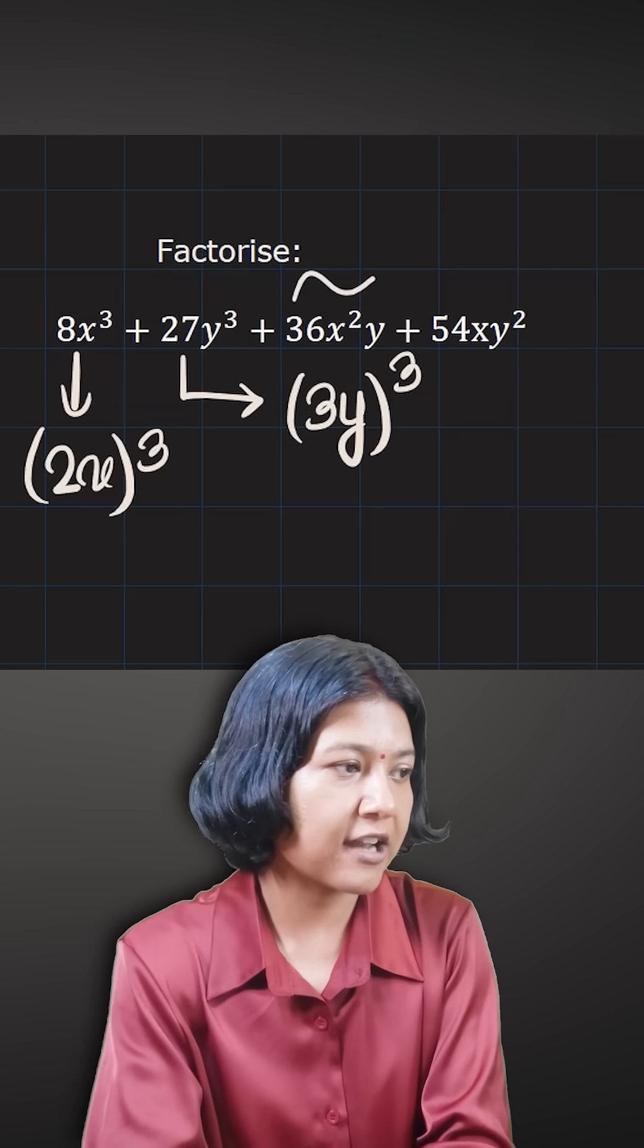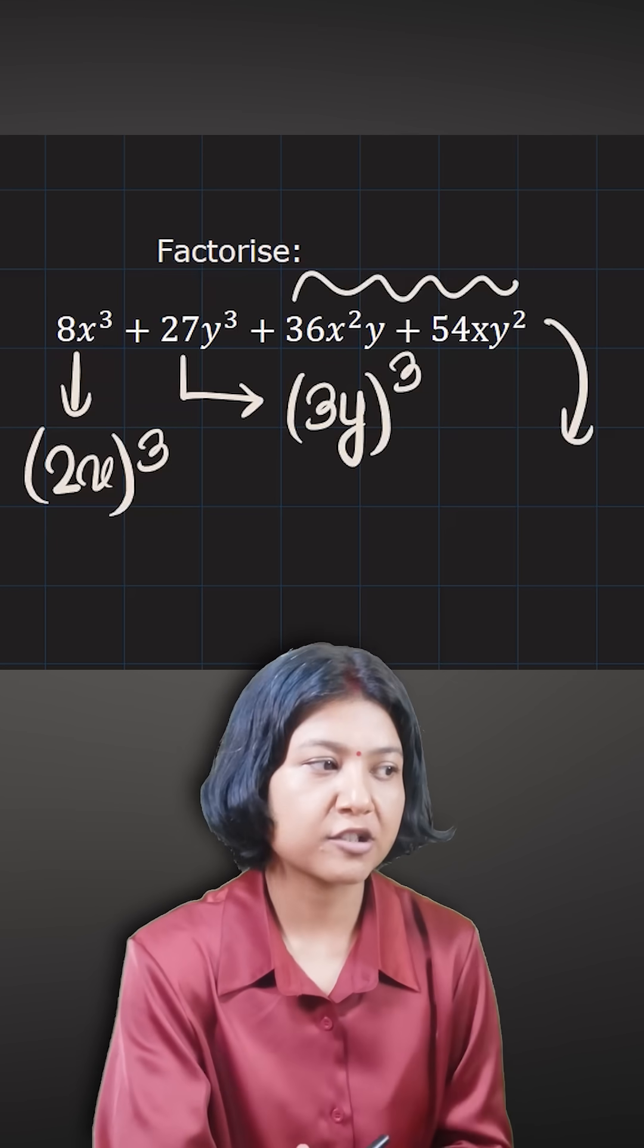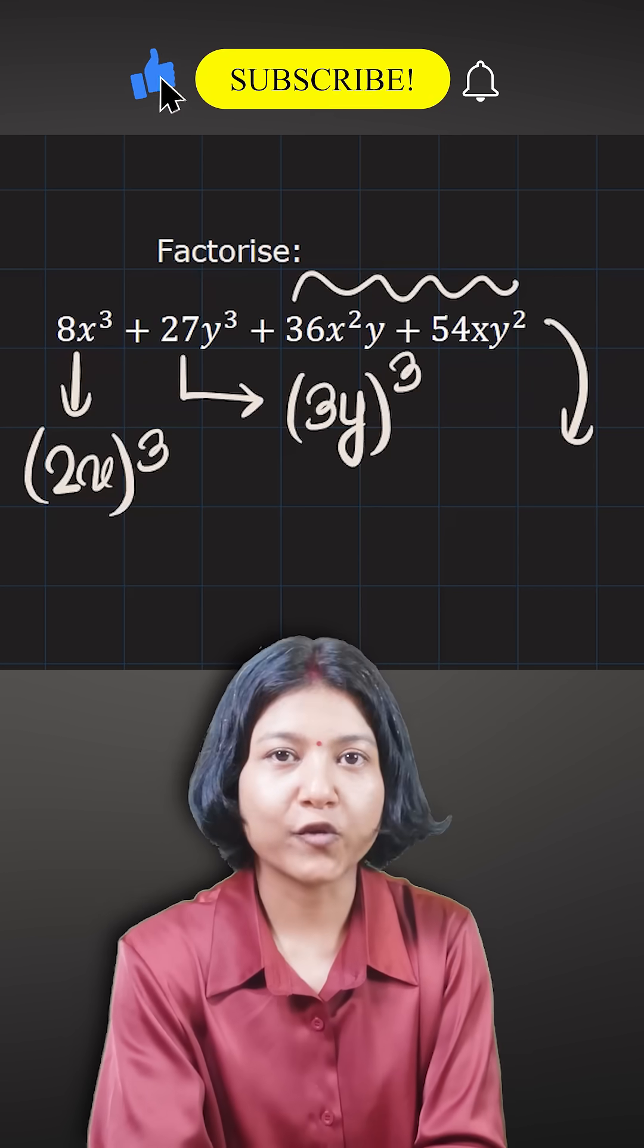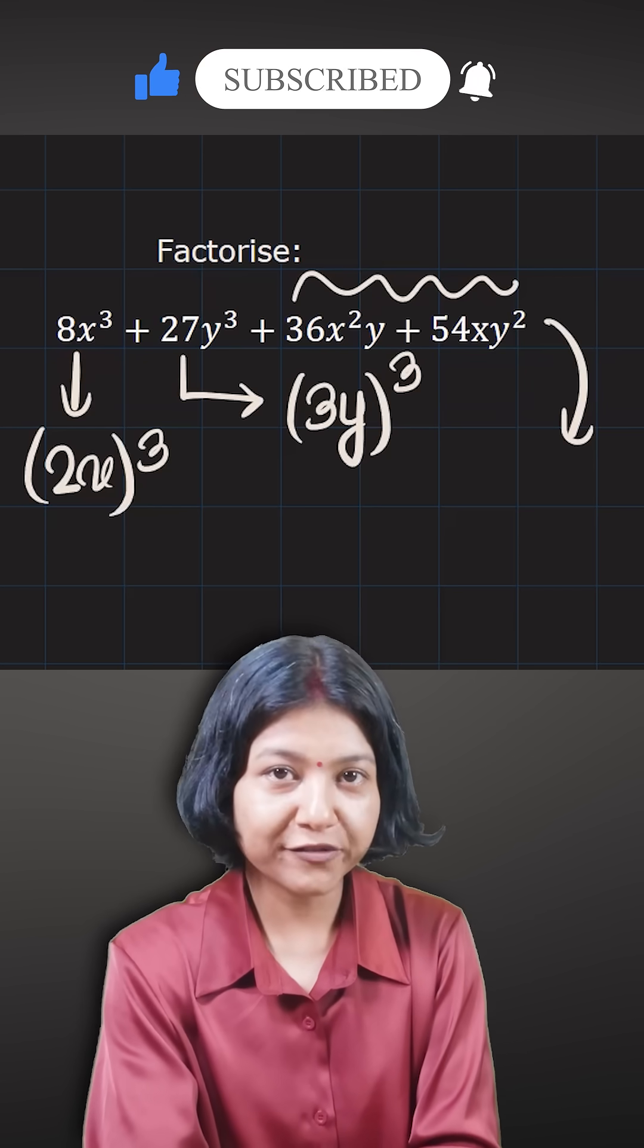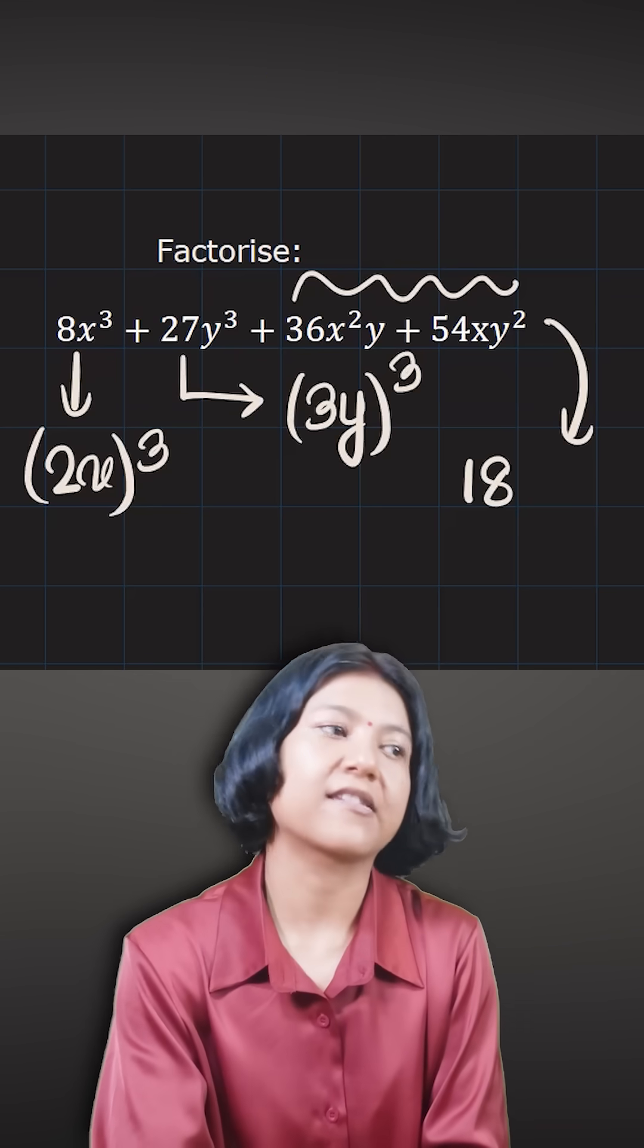Now let's have a look at the last two terms. If you see, the last two terms have very much in common. 36 and 54 both come in the table of 18. So 18 is the highest common factor for 36 and 54.